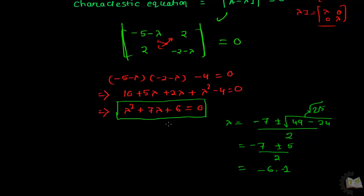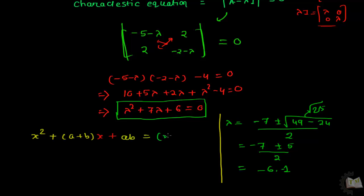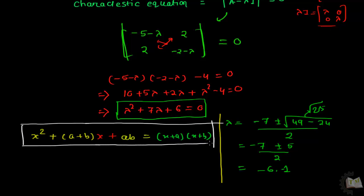There is also a shortcut method to find lambda without using the quadratic formula — this is basic 10th class mathematics. Just remember the format: (x plus A)(x plus B) equals 0. If you compare this general form with the equation, you can find the values of lambda in very few seconds.